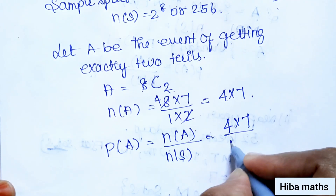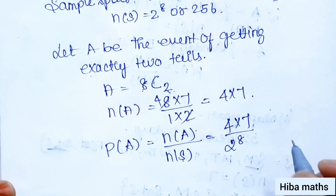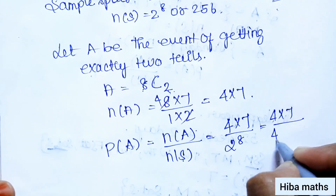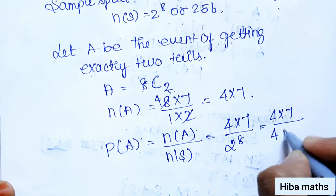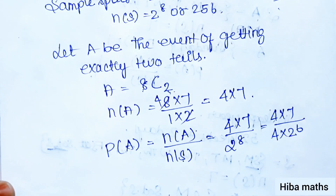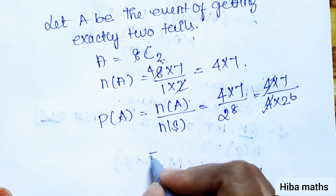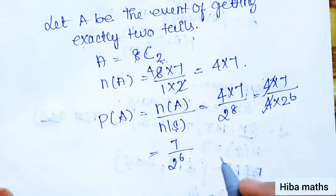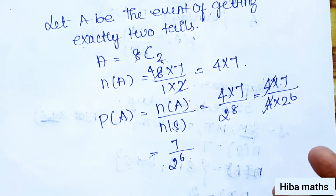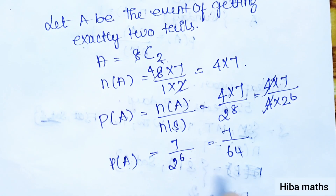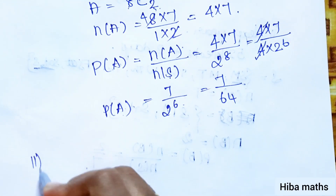P(A) equals N(A) divided by N(S). N(A) is 28, which is 4 into 7, and N(S) is 256, which is 2 power 8. Simplifying: 4 into 7 over 2 power 8 gives 7 over 2 power 6, which is 7 over 64. So P(A) equals 7/64.